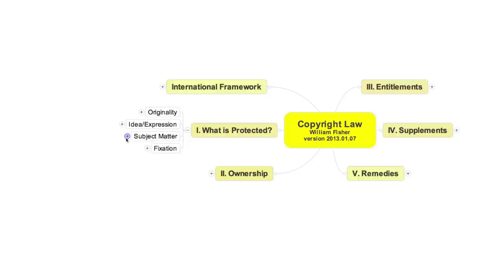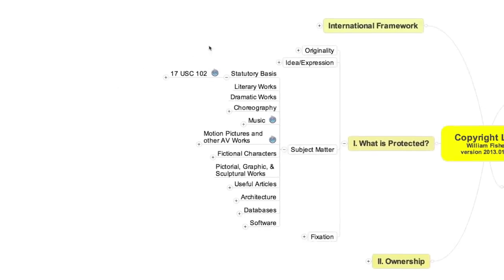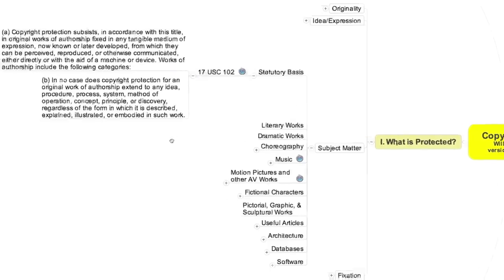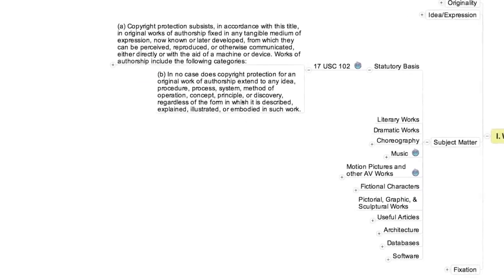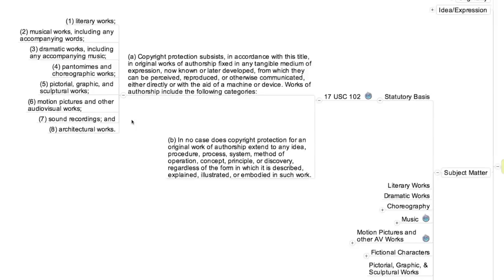As the map indicates, the statutory basis for the subject matter coverage of copyright is Section 102 of the federal statute. In the first lecture, we discussed subsection 102(b), which embodies the idea-expression distinction and related grounds for excluding work from copyright protection. We now focus on Section 102(a), which details the kinds of things that copyright law includes. The language of Section 102 is capacious — it itemizes various kinds of things subject to copyright protection, but also includes a blanket clause indicating that 'original works of authorship of any sort can be protected.' In other words, the itemized list is non-exhaustive.